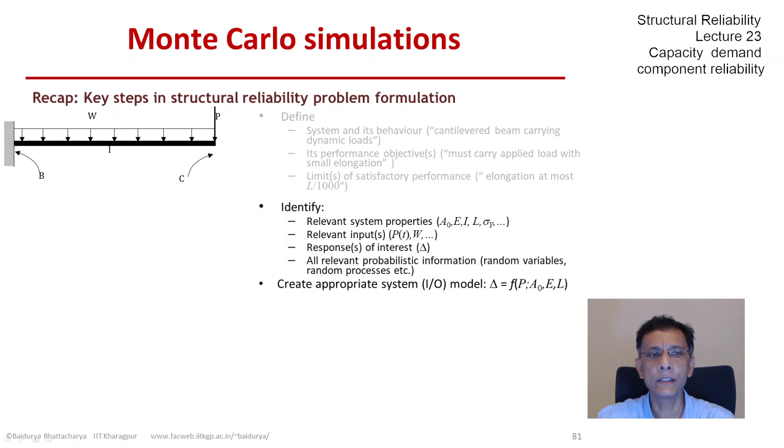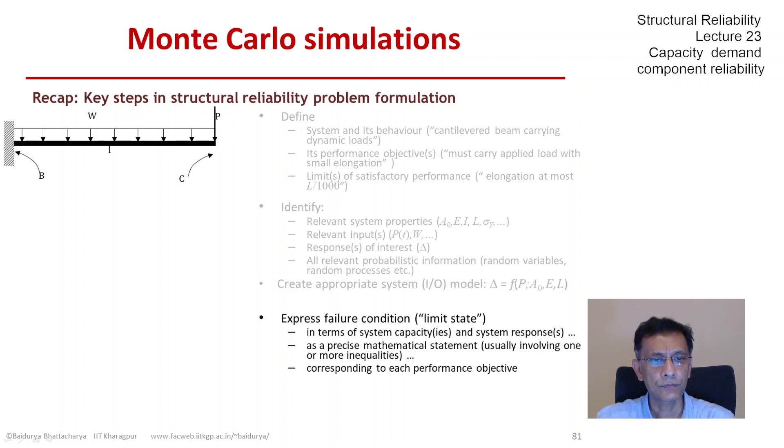And obviously we are looking at physics-based definition of system behavior and failure, which is why we are talking about this capacity demand type reliability. And now, once we have been able to express failure in a clear mathematical term involving the mechanics of the problem and the system parameters, then we should like to compute the probability of failure.